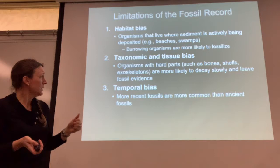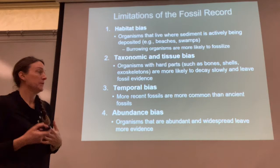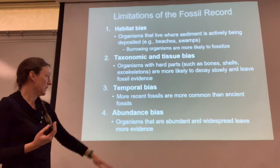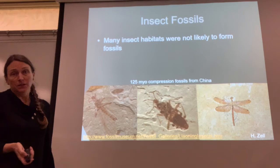There's a temporal bias, meaning that more recent fossils are more common than ancient ones. And then there's an abundance bias, meaning that organisms that are more abundant are more likely to leave evidence. We're lucky with insects because insects are so abundant.